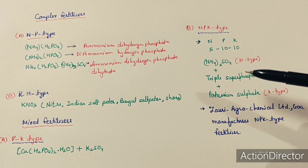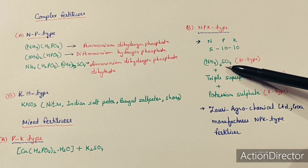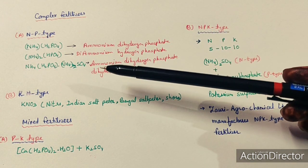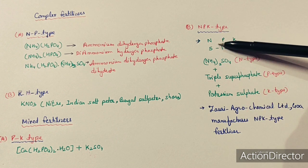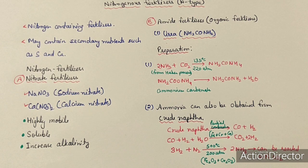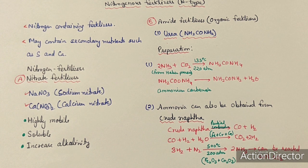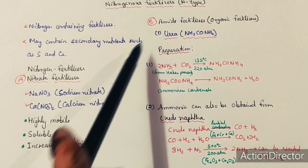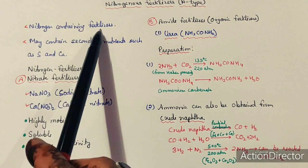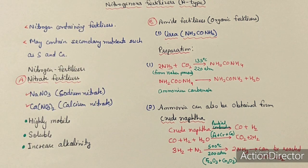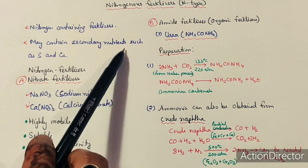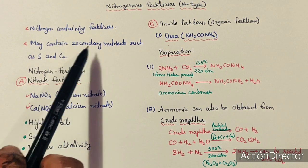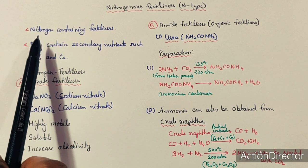The key difference: mixed fertilizers are made by mixing straight fertilizers, while complex fertilizers are directly prepared as compound substances. Now we will discuss different types of primary nutrient fertilizers one by one, starting with nitrogenous fertilizers (N-type). These are nitrogen-containing fertilizers and may also contain secondary nutrients like sulfur and calcium. Nitrogenous fertilizers are divided into groups: nitrate fertilizers, amide fertilizers, ammonical fertilizers, and mixed nitrogenous fertilizers.